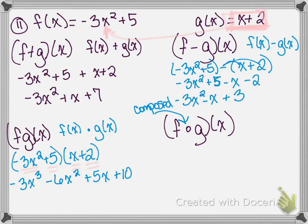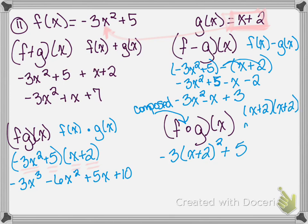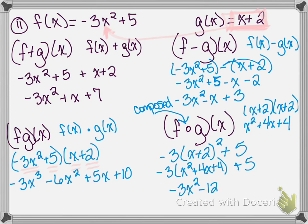So we are going to have negative 3 times x plus 2 squared, plus 5. The first thing we need to do is foil x plus 2 times x plus 2. X plus 2 squared equals x squared plus 4x plus 4. Now we take that negative 3 and distribute it across that trinomial, giving us negative 3x squared minus 12x minus 12. Then we combine like terms: negative 12 and positive 5 gives negative 7.